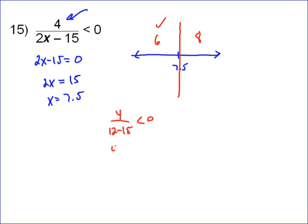If I put in 8, I get 4 over 16 minus 15, which is a positive number, right? 16 minus 15 is 1. 4 divided by 1 is 4. That is not less than zero, so that doesn't work.